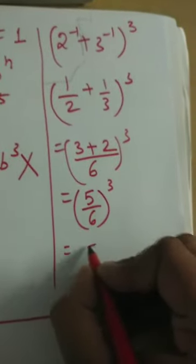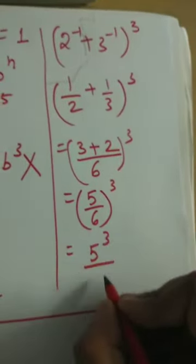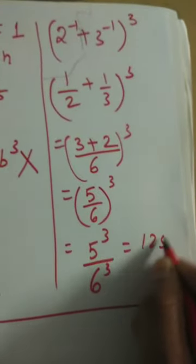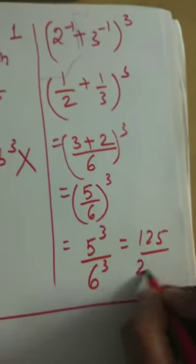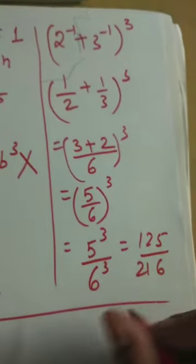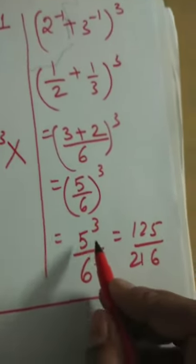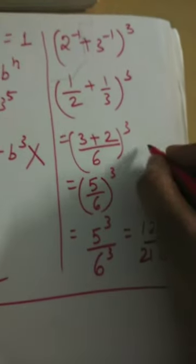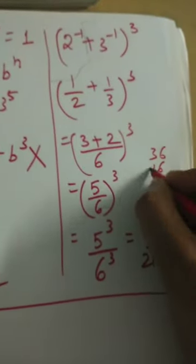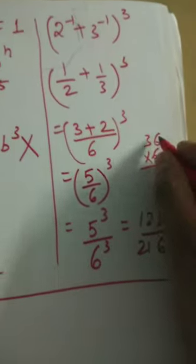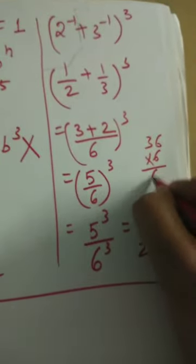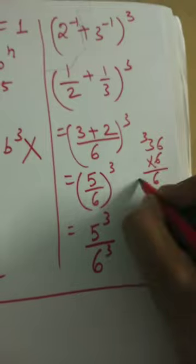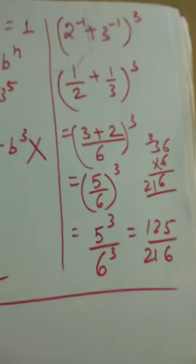Continuing: (5/6) power 3 equals 5 power 3 upon 6 power 3. Now 5 power 3 is 5 × 5 × 5 = 125, and 6 power 3 is 6 × 6 × 6 = 216. So the answer is 125 upon 216.